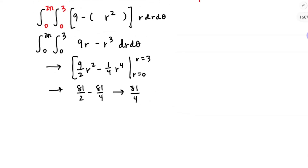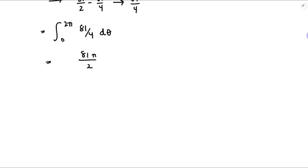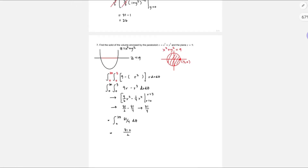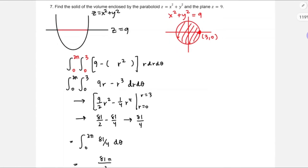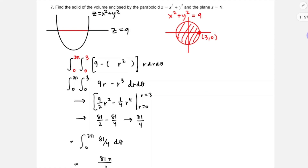Integrating 81/4 with respect to θ from 0 to 2π just multiplies by 2π, giving 81π/2. And that's the end of this quiz. I'm going to come back in a separate video and work all the Form P quizzes, but that's all for this one. Thanks for watching.